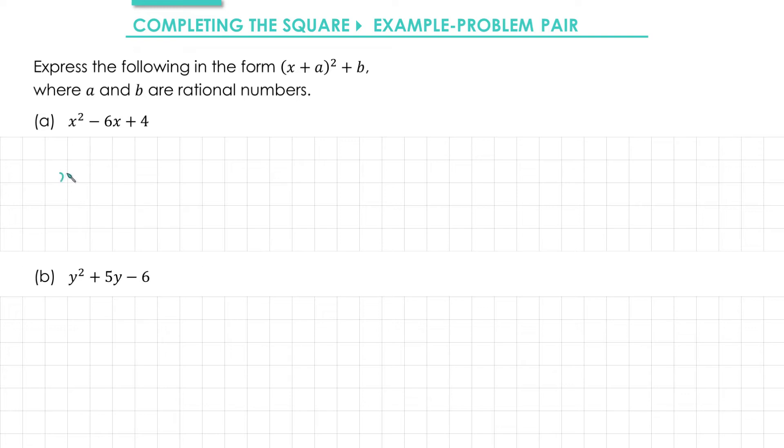So in part a we have x squared minus 6x plus 4. First of all I'd like to deal with the x squared minus 6x part. And the way I'm going to do that is I'm going to have a bracket that has x minus 3 square.